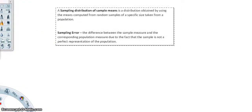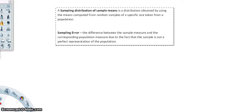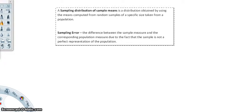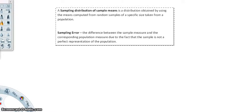Here's some vocabulary for the section. A sampling distribution of sample means is a distribution obtained by using the means computed from random samples of a specific size taken from a population. So if we have a population and we take out different pieces without replacement, we create samples. When we find the means of all those different samples, we have our sample means, and the distribution of those sample means is our sampling distribution.